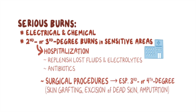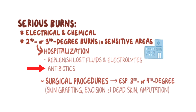For more serious burns — such as electrical and chemical burns, or second or third degree burns in sensitive areas like the face, hands, and genitalia — hospitalization in specialized burn centers is often needed. It is important to replenish lost fluids and electrolytes and prevent infections with antibiotics. Surgical procedures like skin grafting, excision of dead skin, or amputation may be needed, especially in third or fourth degree burns.